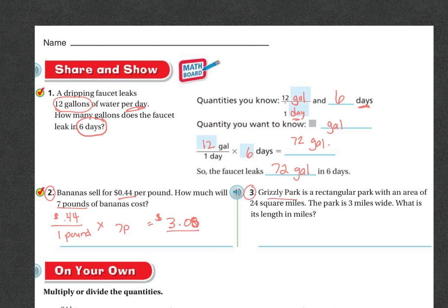Number three: Grizzly Park is a rectangular park with an area of 24 square miles. The park is three miles wide. What is the length in miles? So we've got 24 square miles. And the park, we know, is three miles wide. Remember that area equals the length times the width. So if I already know the area, my area is 24. So I'm going to write the formula: Area equals length times width. Area is 24. We don't know the length, but we know that the width is three.